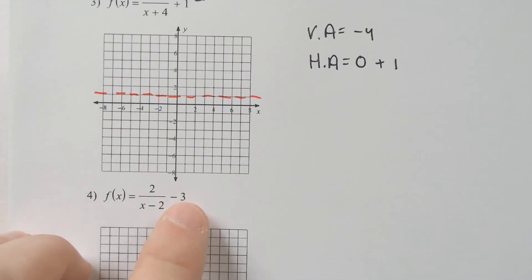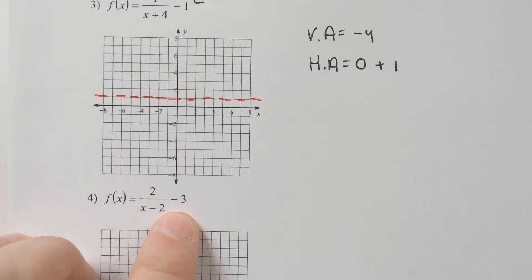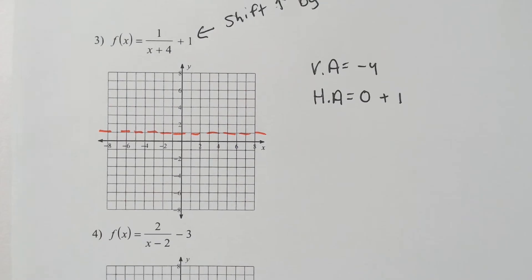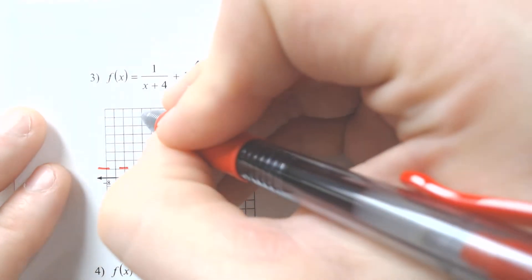Now this would happen any time you have a number off to the right. So this one got shifted up by one. This one right here would get shifted down by three. So instead of it having a horizontal asymptote of zero, it would have a horizontal asymptote of negative three. It is not guaranteed to be the horizontal asymptote, although most of the time it is. All right, vertical at negative four.